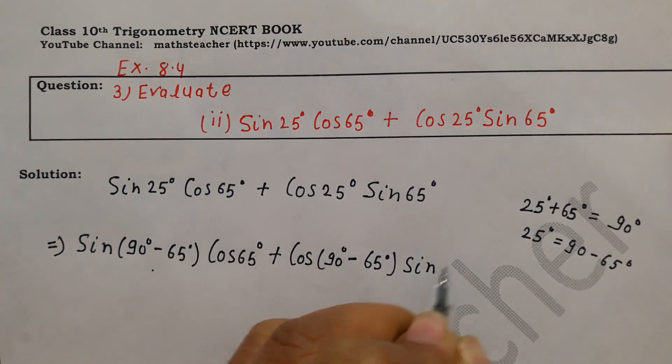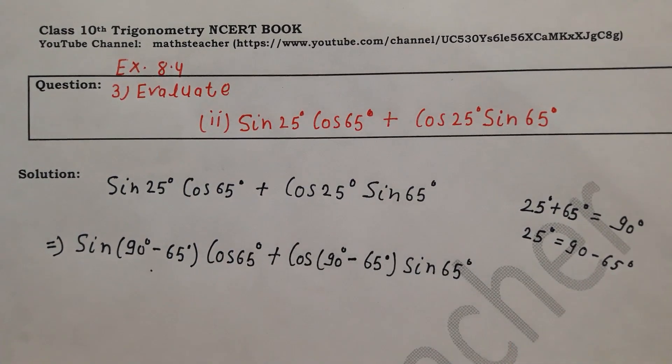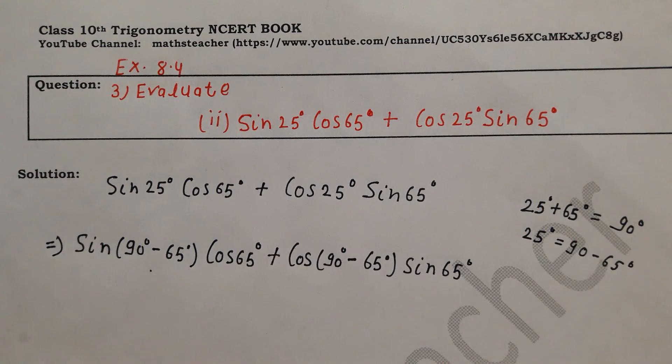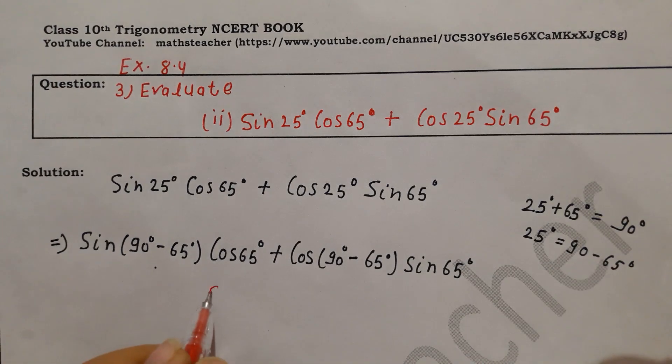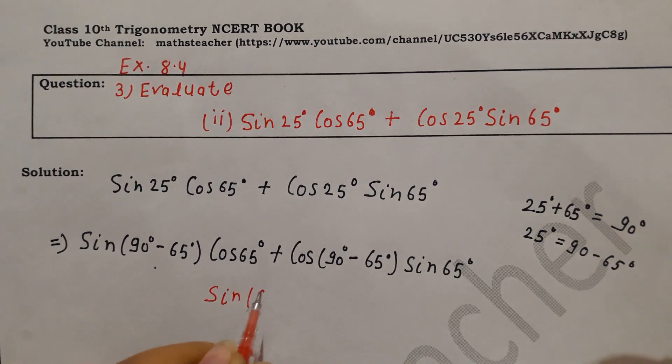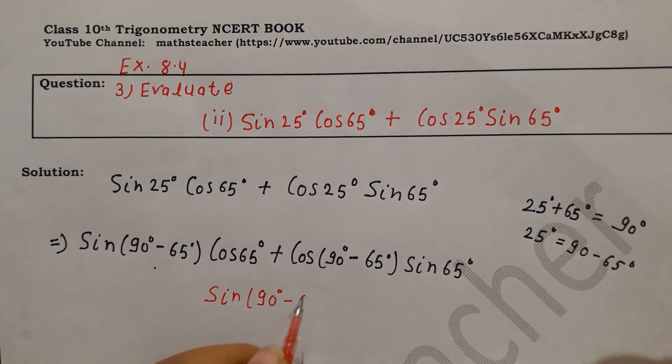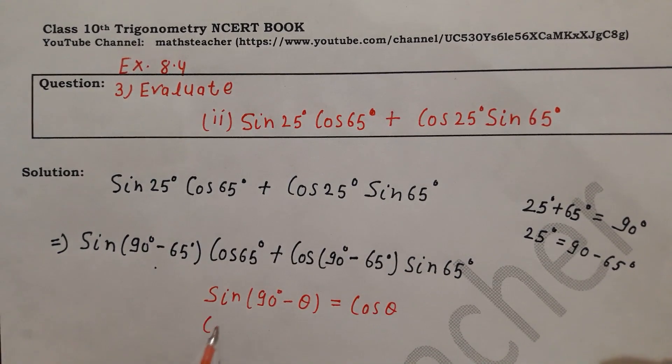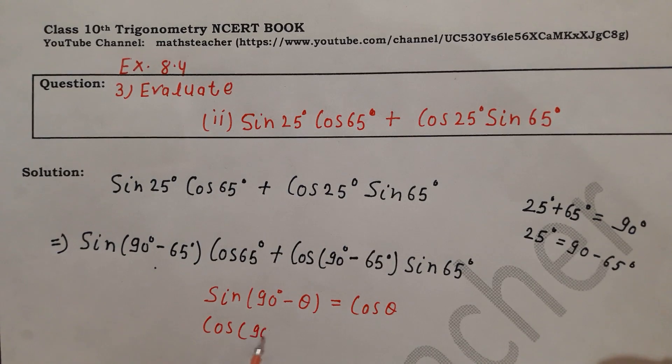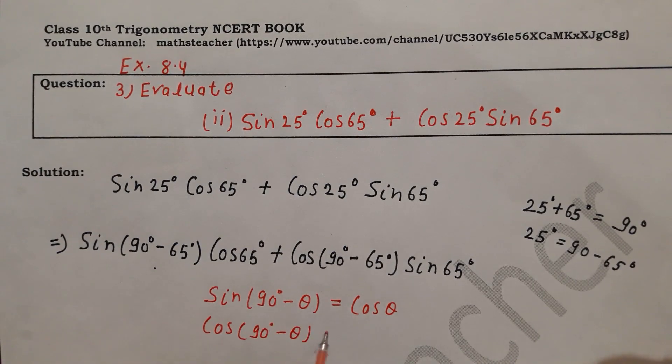Now our identity, sin cos complementary ratio, we have to write. Which two identities do we use? Sin 90 minus theta equals cos theta. Cos 90 minus theta equals sin theta.